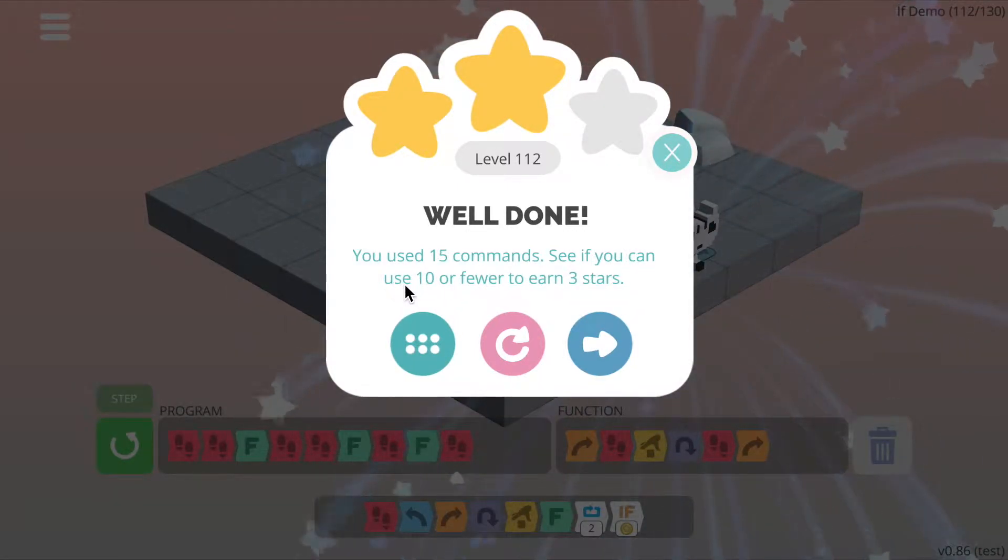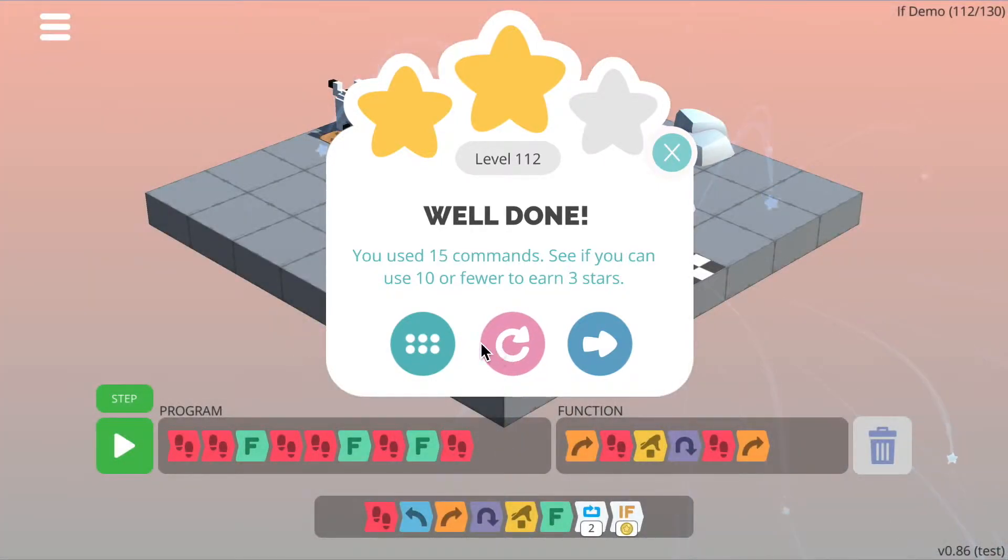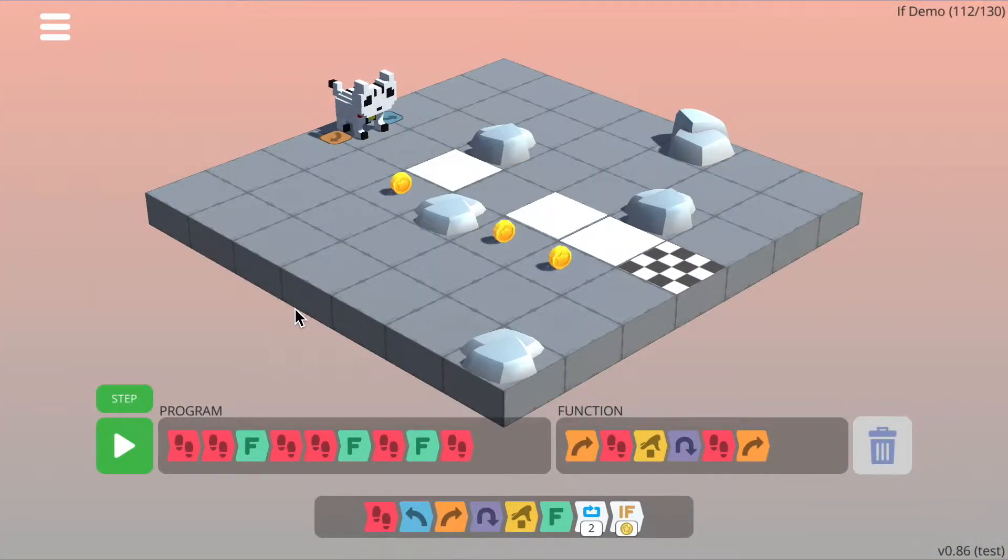In order to get 10 or fewer commands, we need to use an if statement and that's what I'm going to show you how to do now. So if we look at the level, we can see that actually what we were doing is every time we got to a white tile, we were calling the function to get the coin. So we did it there, there and there. So we can use that to our advantage.